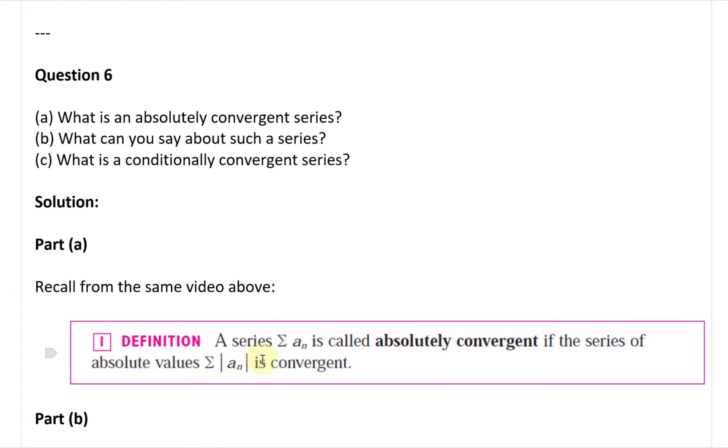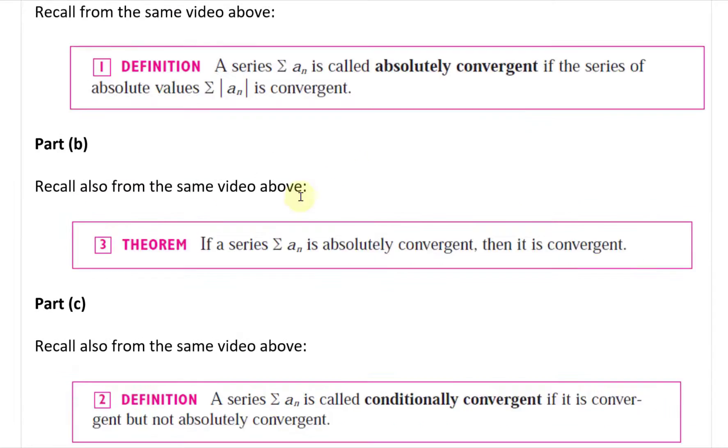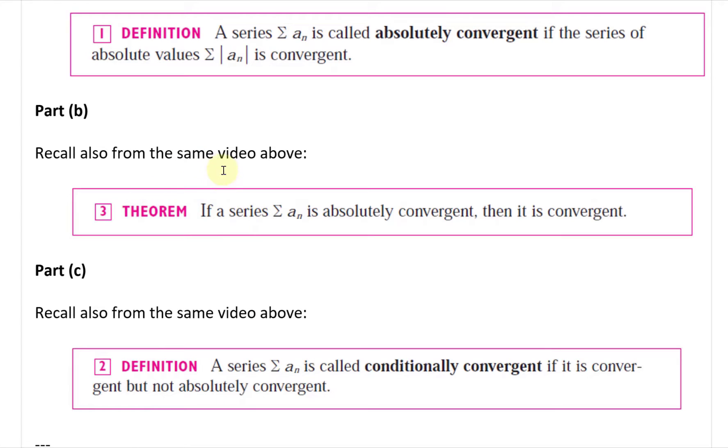So there's always positive values there. If it's absolutely convergent, if this series is convergent using absolute values, then part (b), what can you say about such a series? Recall from the same video. The theorem: if a series, the summation of aₙ, is absolutely convergent, then it is convergent without the absolute values.